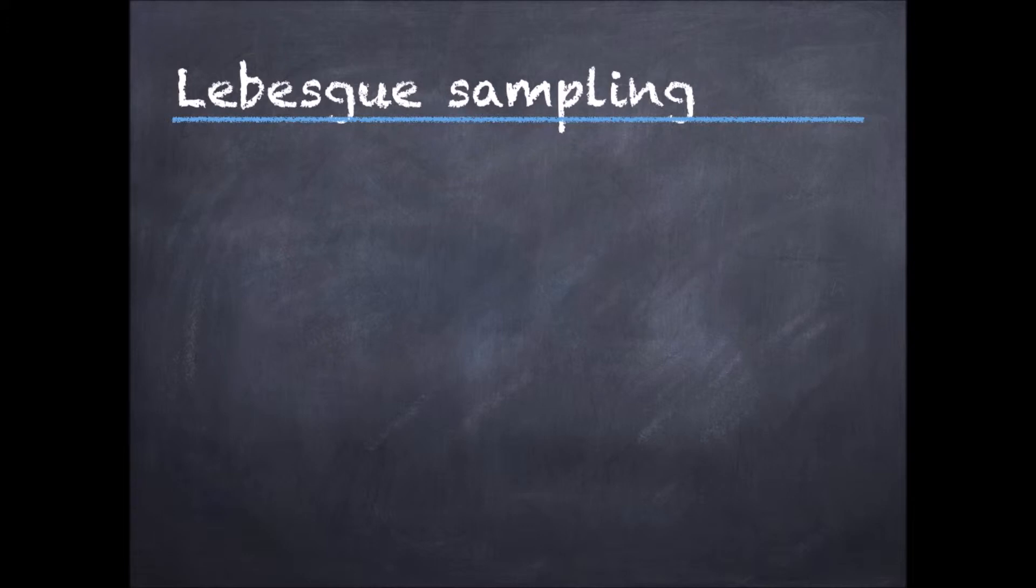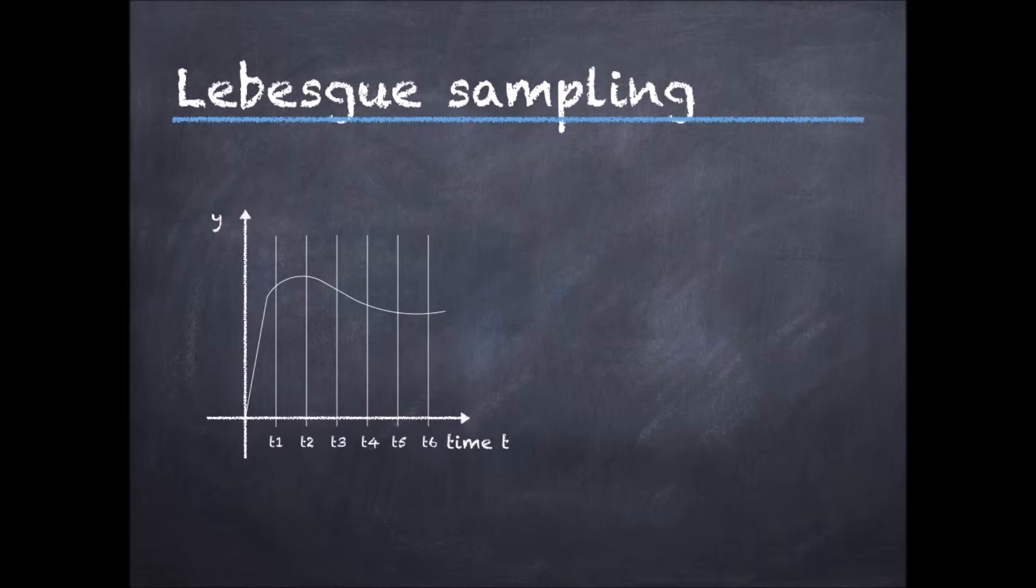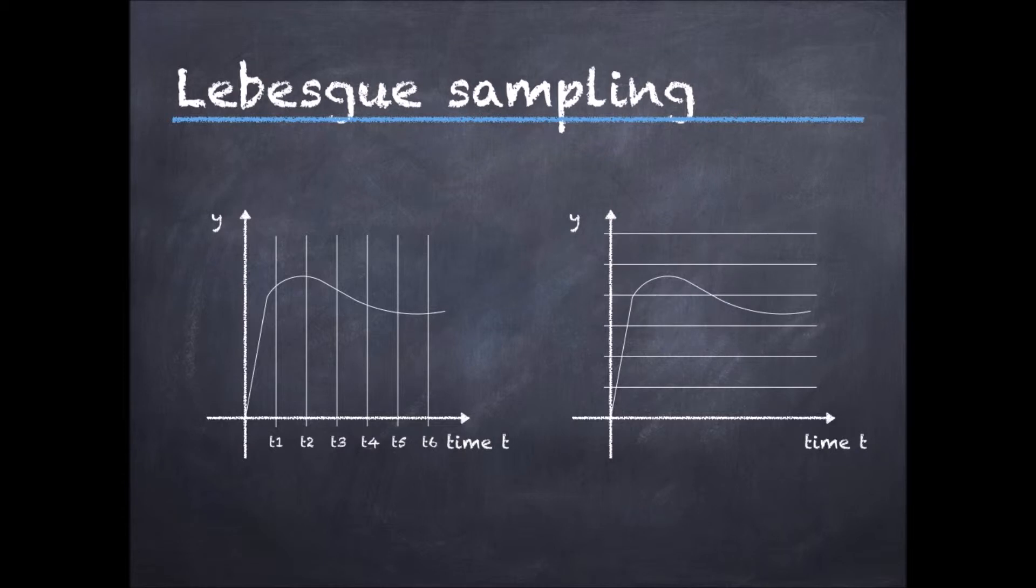Say that we plot the output of the system and we want to have a look at the control times. Now, in periodic control, one would partition the time domain with evenly spaced intervals and sample and control at these times tk. Let us plot the same output function. In Lebesgue event-triggered control, we partition the measurement space, that is, the codomain, instead of the domain.